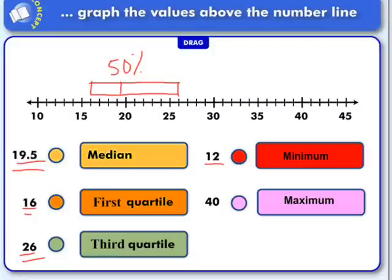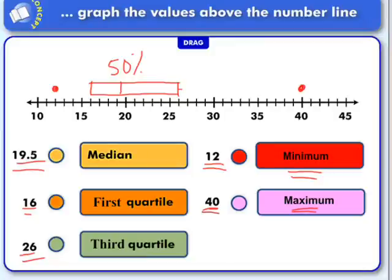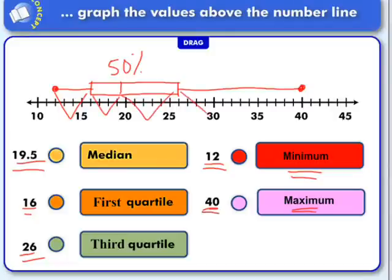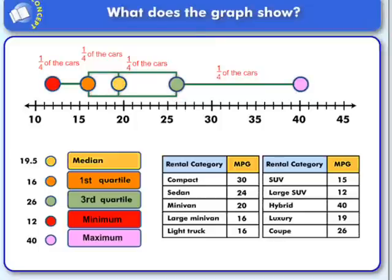Let's look at the smallest value, also known as the minimum. The car that got the least gas mileage was 12 miles per gallon. Now something important here — this dot doesn't mean that's just one car; that could actually represent multiple cars. The greatest piece of data, our maximum value, is 40. Now I'm going to go ahead and draw my whiskers. So 25% of the cars get gas mileage between each of these intervals, and a box plot takes all the data and breaks it into quarters.